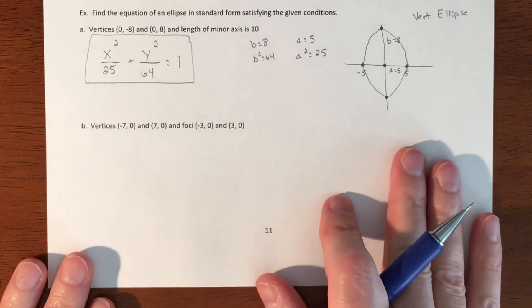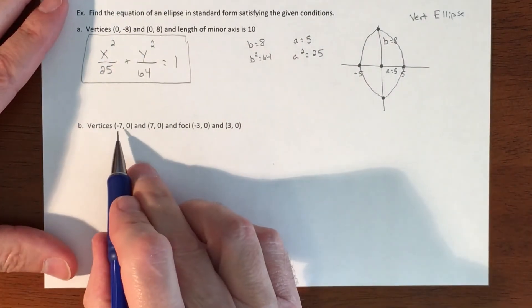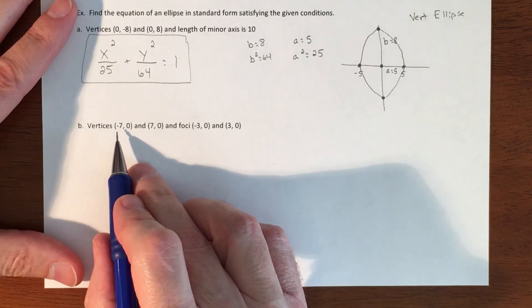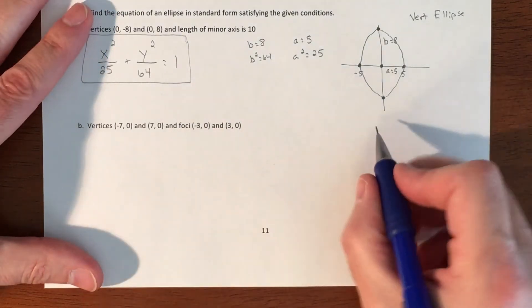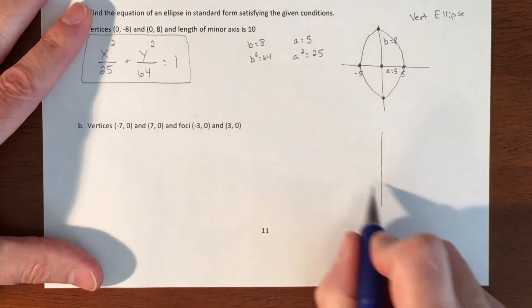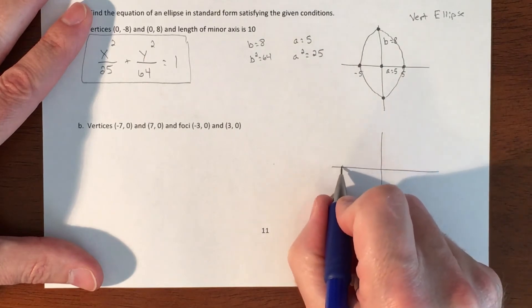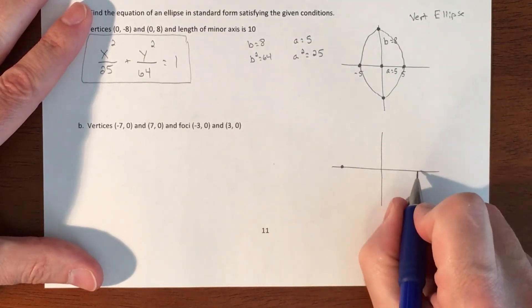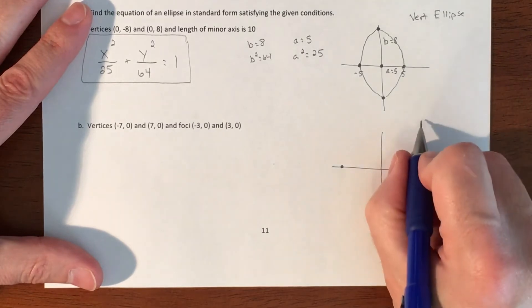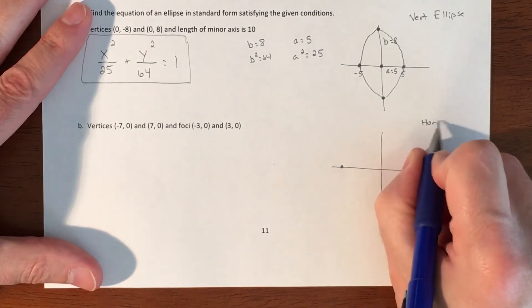On the next one we get different information. Vertices will tell me if we have a vertical or horizontal ellipse. We have vertices at (-7, 0) and (7, 0). That's telling me we have a horizontal ellipse.